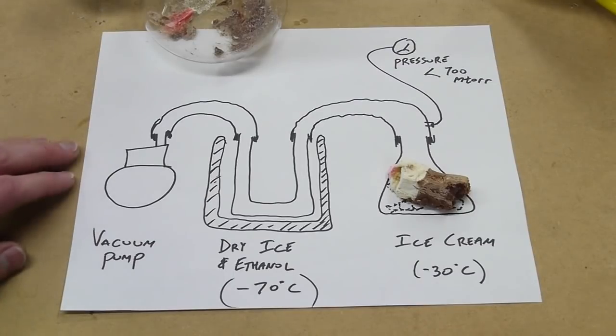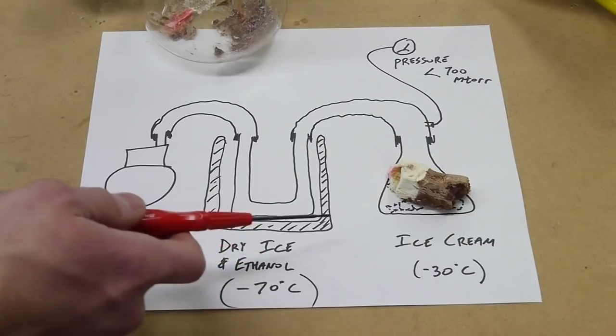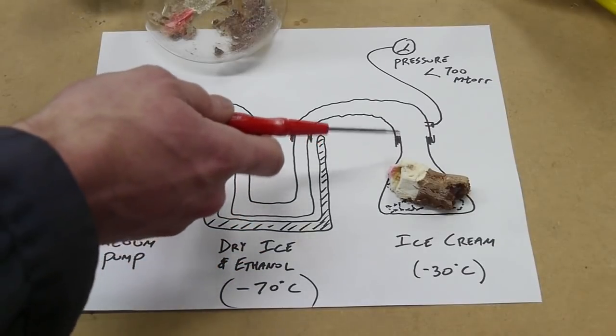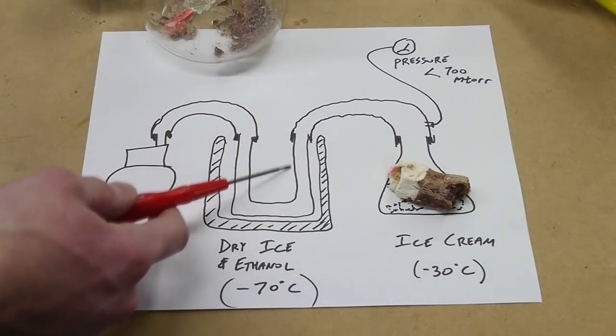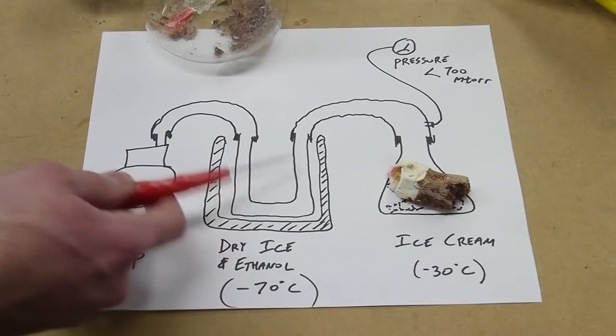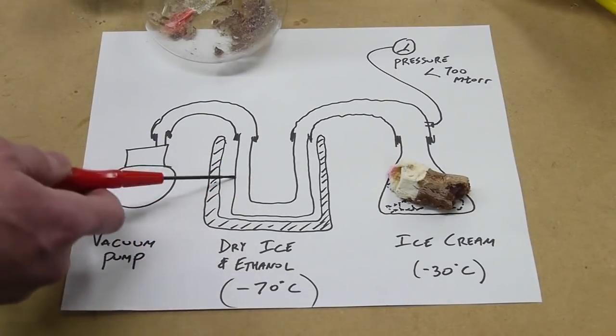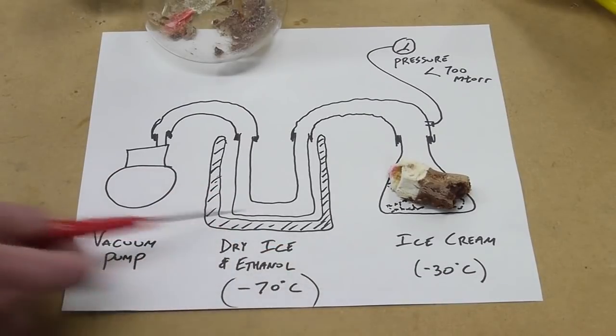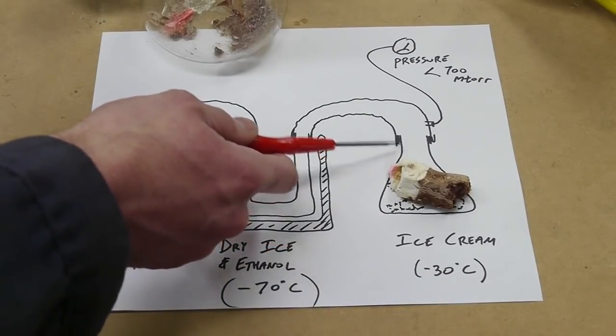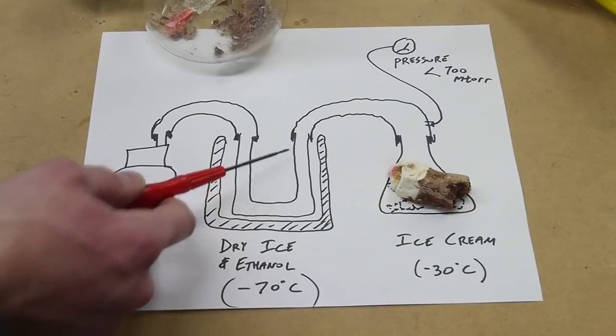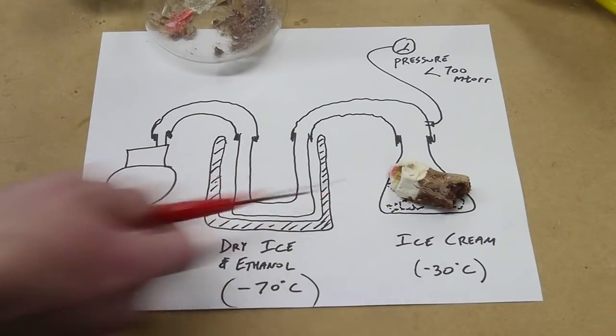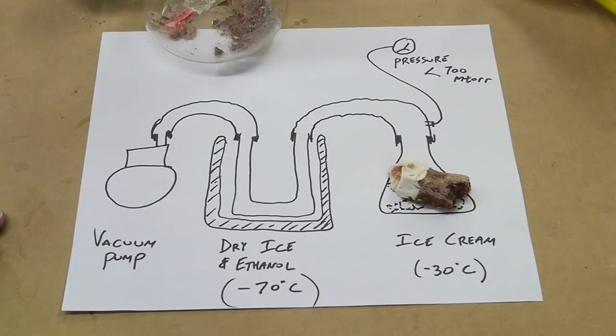When the vacuum pump is turned on, the pressure is lowered and the water will start to sublimate out of the ice cream and travel through the tube and get stuck here. The reason it gets stuck here is because it's much colder in the cold trap than in the chamber, and for a given pressure the water will sublimate here and then re-solidify here. So we end up with the water being sucked out of the ice cream and transferred into this cold trap.